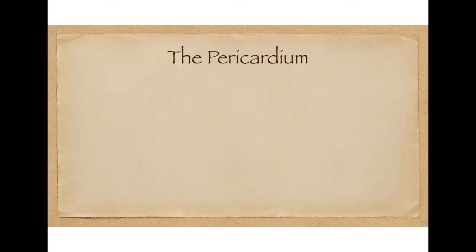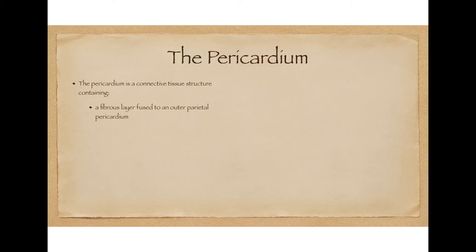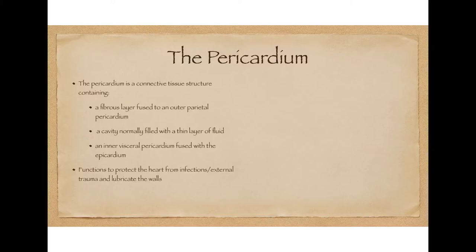Starting with the structure of the pericardium, it is essentially a connective tissue structure containing the following components: an outer fibrous layer fused to the parietal pericardium, a cavity that's normally filled with a thin layer of fluid, and an inner visceral pericardium that's fused with the epicardium, the outer layer of the heart. The function of the pericardium is to protect the heart from infections and external trauma and also to help lubricate the walls of the heart. Fortunately, it can be safely removed with very little detrimental effect on the heart itself.